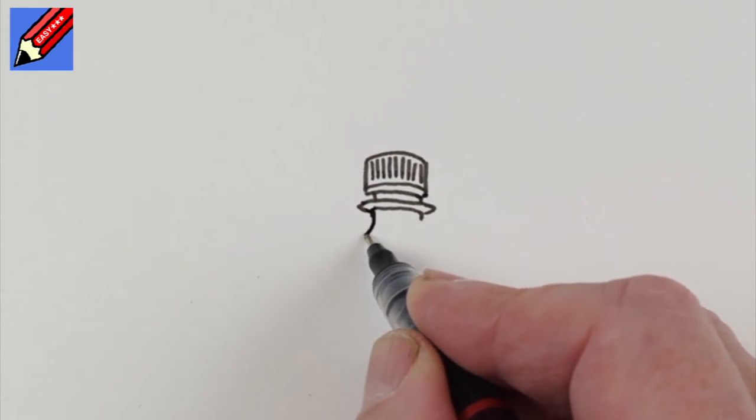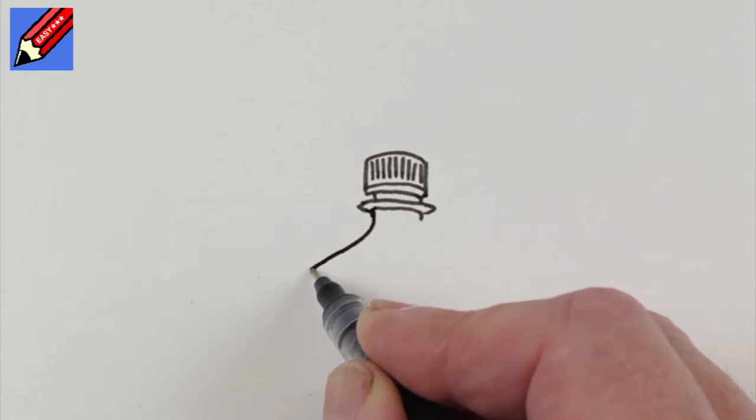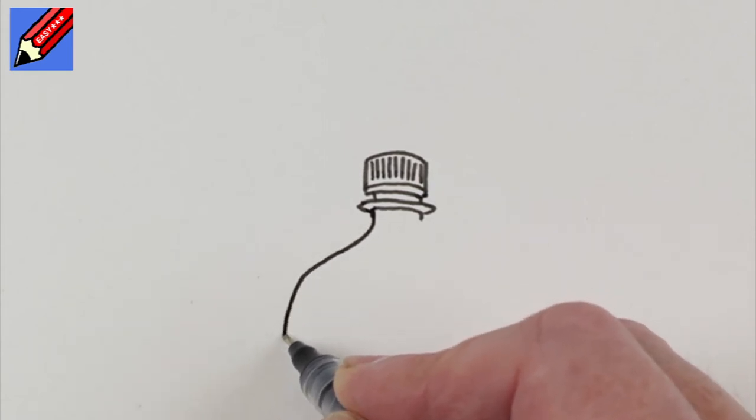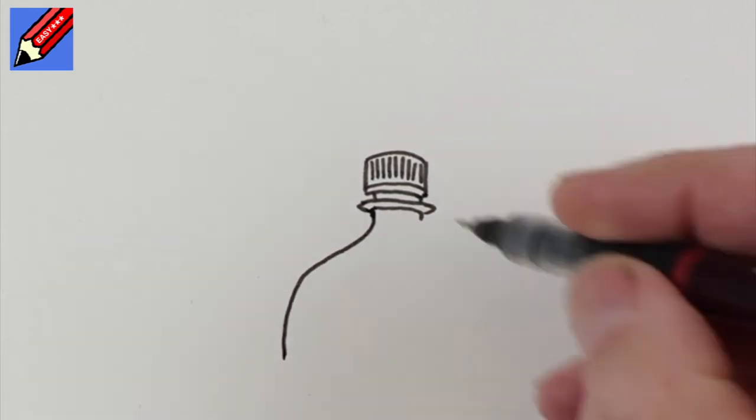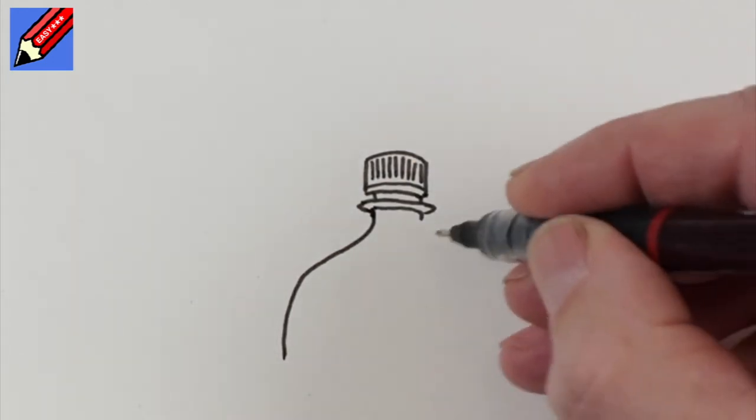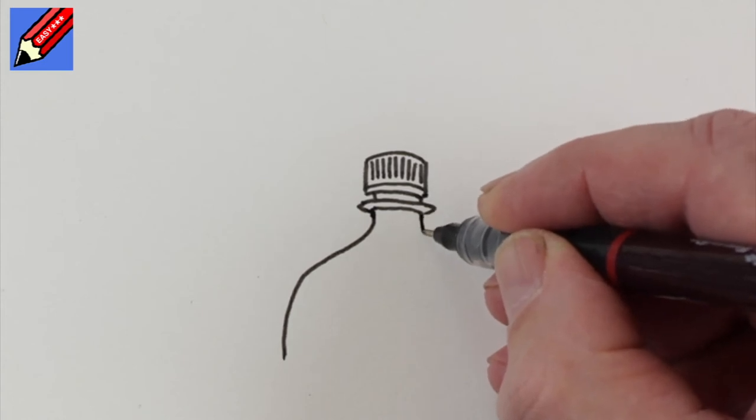Now this is the tricky bit. I want to come down and around like that and a nice curve which I find it easy to do that way, but this way I find it really difficult.